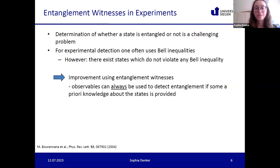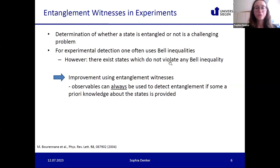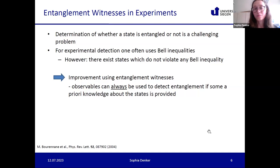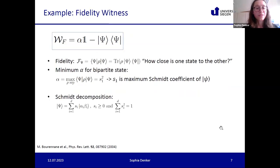From an experimental perspective, it is always a hard challenge to determine whether a state is entangled or not. One can often use Bell inequalities to do so, but there exist some states which do not violate any Bell inequalities, so you might not certify them. One can improve this using entanglement witnesses, since those are observables and can always be used to detect entanglement if we have some a priori knowledge about the state.